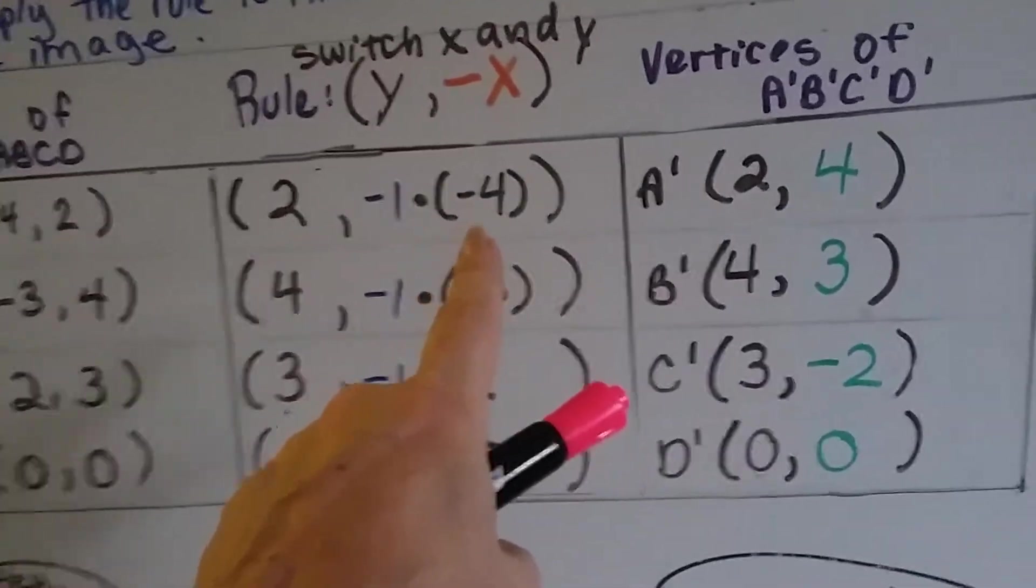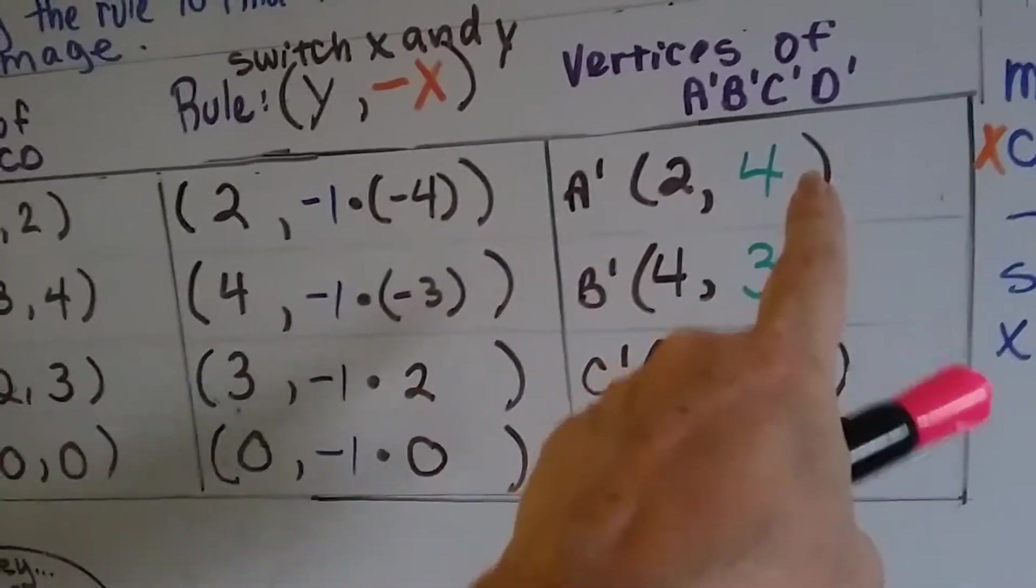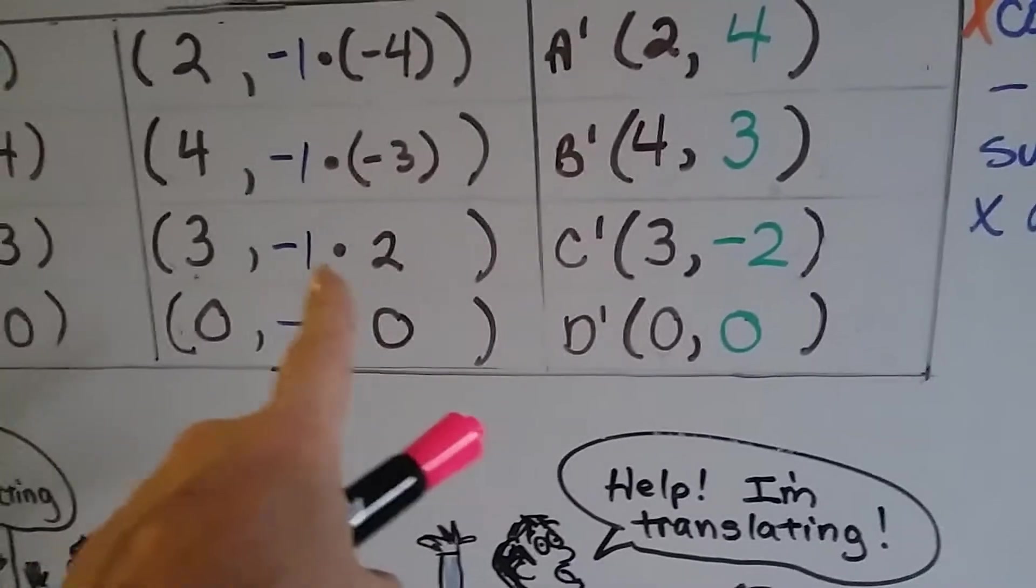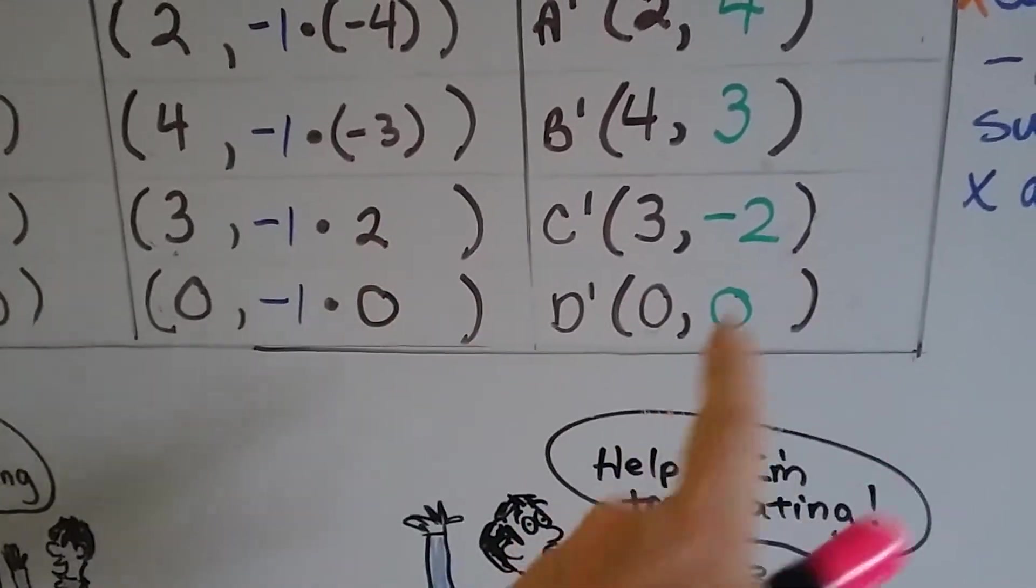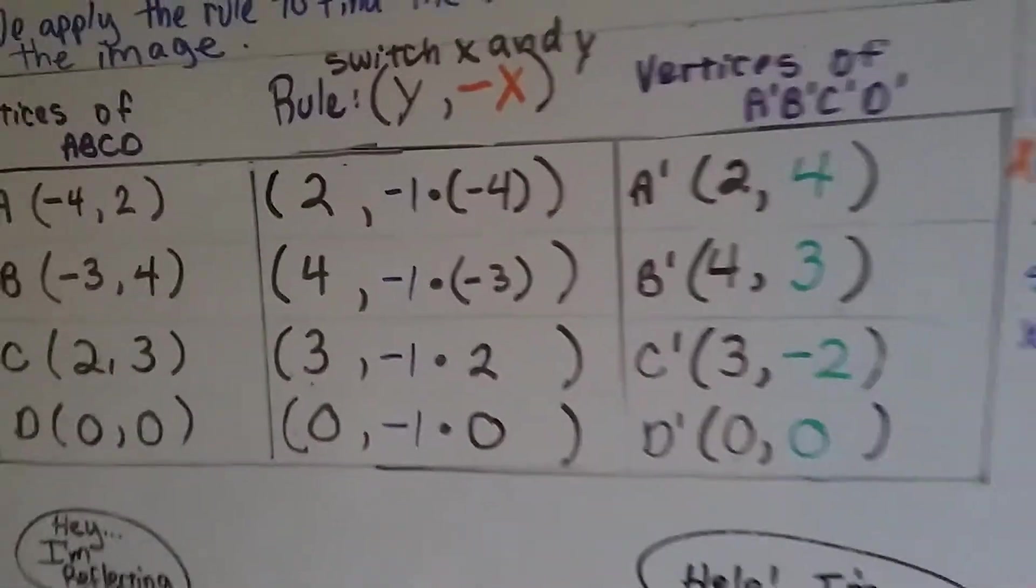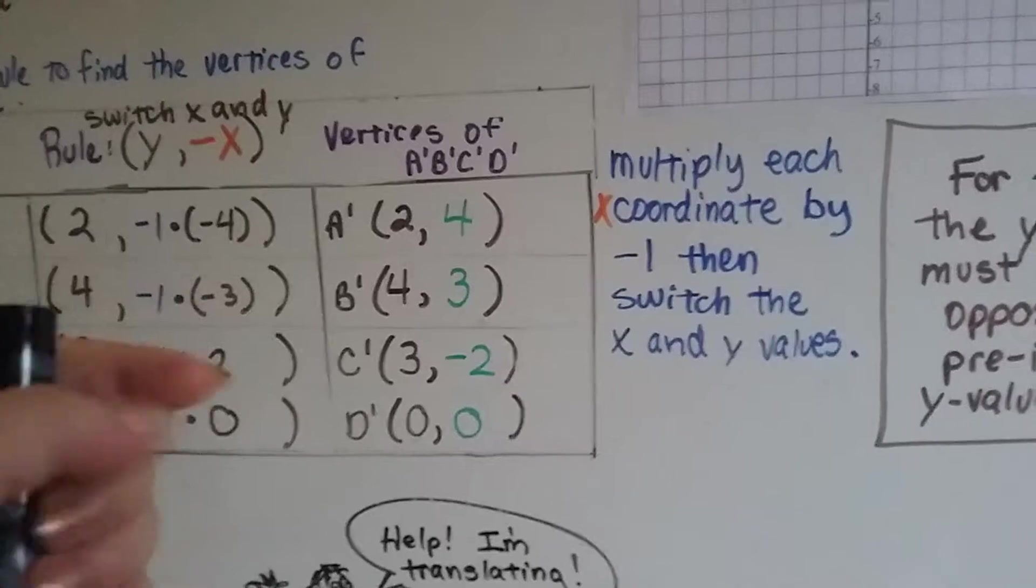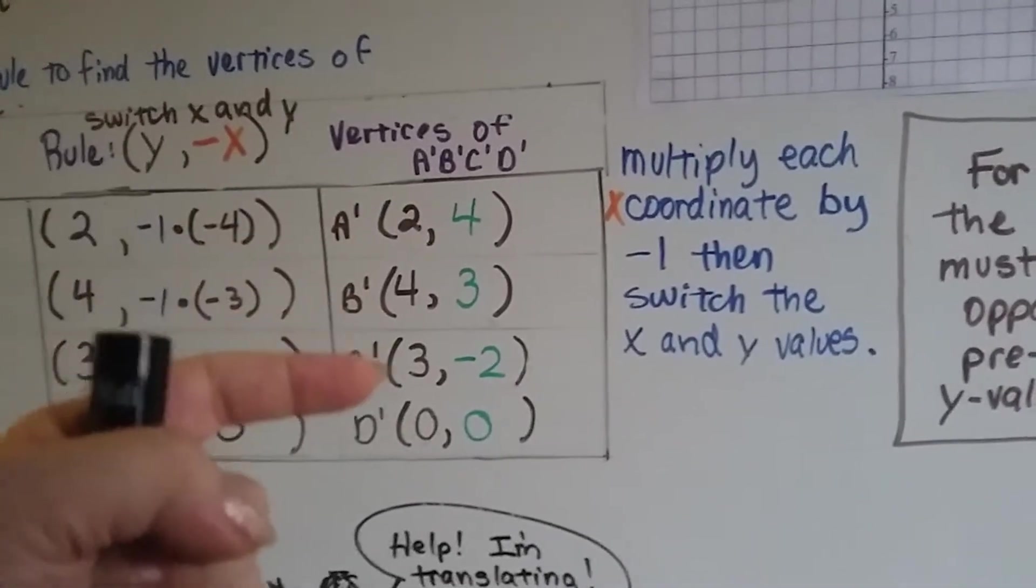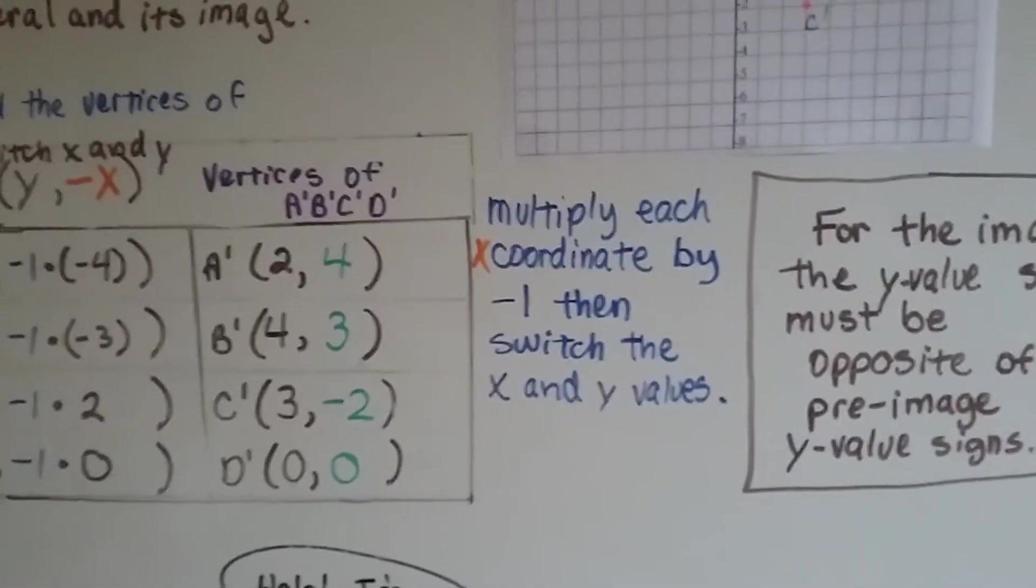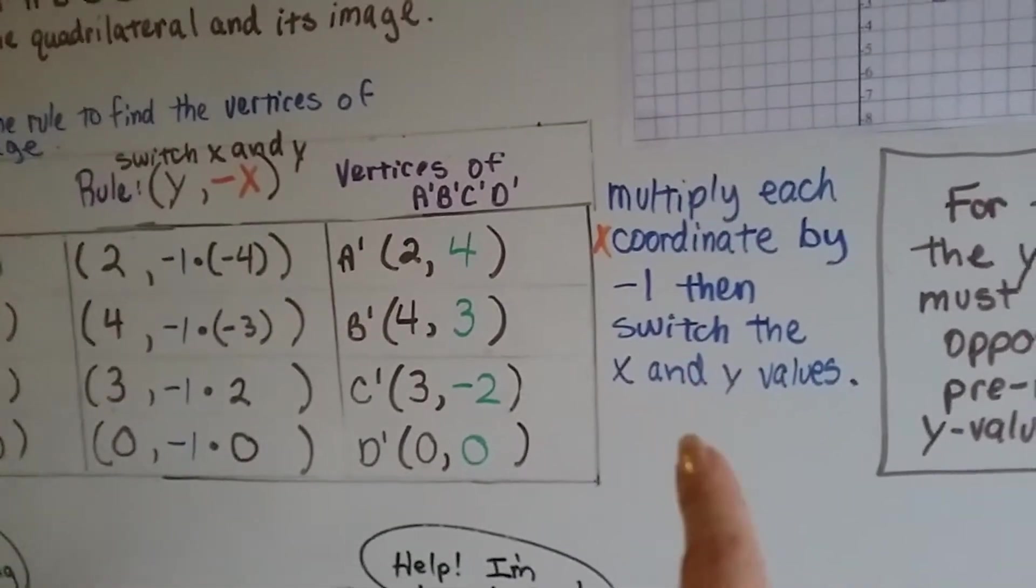So now we're going to do negative 1 times negative 4, which is a positive 4, because a negative and negative make a positive. Negative 1 times negative 3 makes a positive 3. Negative 1 times positive 2 makes a negative 2. And negative 1 times 0 makes 0. So now we've got our new coordinates and vertices for A prime, B prime, C prime, and D prime for our quadrilateral. We multiplied each x-coordinate by negative 1 and then switched the x and y values.